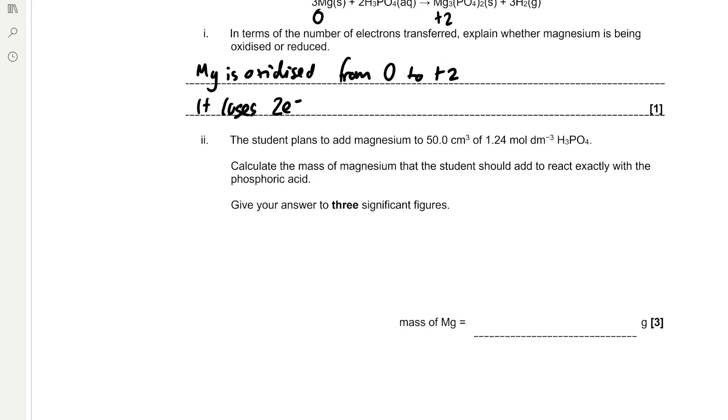The student plans to add magnesium to 50 cm³ of 1.24 mol/dm³ phosphoric acid. Calculate the mass of magnesium that the student should add to react exactly with the phosphoric acid. Give your answer to 3 significant figures. So we can first find the moles of phosphoric acid by using the equation moles equals concentration times volume.